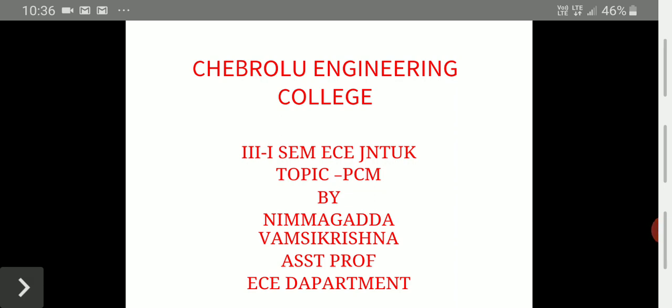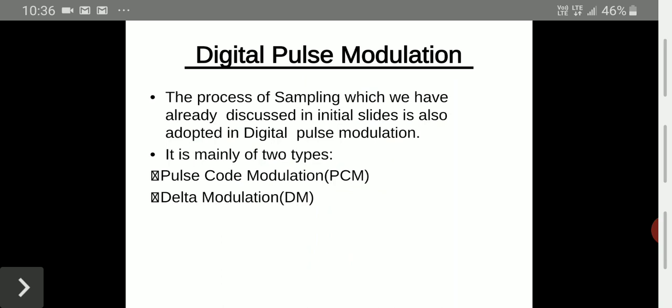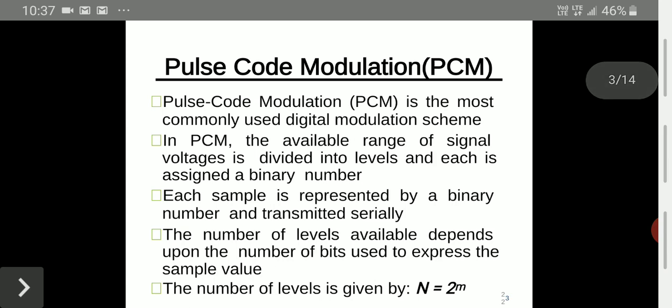Good morning friends. Today our topic is Pulse Code Modulation (PCM). Coming to PCM, the process of sampling which we have already discussed — there are mainly two types of modulation techniques for converting analog to digital: pulse code modulation and delta modulation. PCM is the most commonly used digital modulation technique.